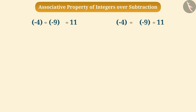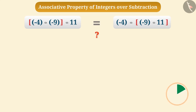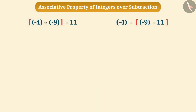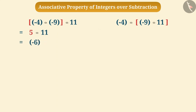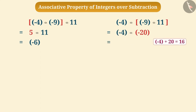Can we group them in any order to perform subtraction? Will there be any difference in the result? If we make a group of minus 4 and minus 9, the result of their subtraction will be 5. When we subtract 11 from it, we get the result minus 6. Similarly, if we make a group of minus 9 and 11, the result of their subtraction will be minus 20. Subtracting minus 20 from minus 4 gives us the result 16.